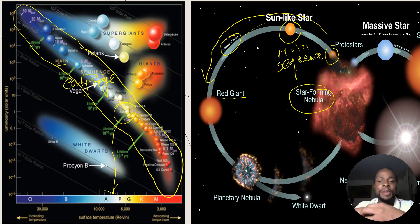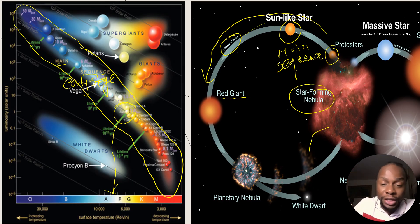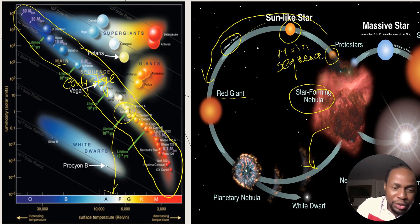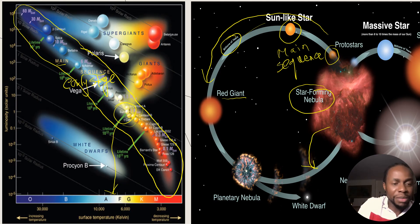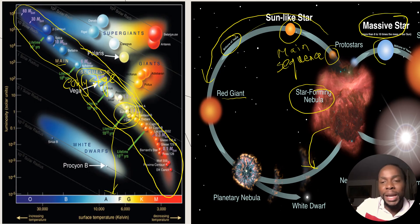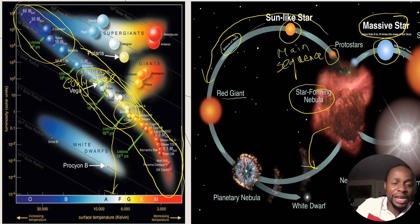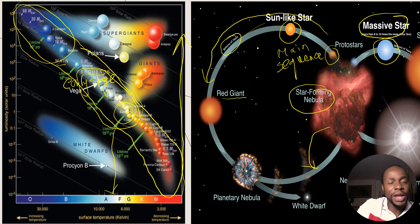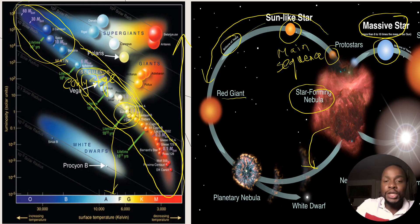Young stars can be huge massive stars, or average stars, or red dwarfs as we talked about in our last lesson. Red dwarfs are all the way at the bottom — very small in size. Average stars like our Sun are in the middle of the main sequence ranging from yellow to white to bluish-white. Massive stars are mainly blue in color and are on the upper end of the main sequence diagonal, since mass increases upward.